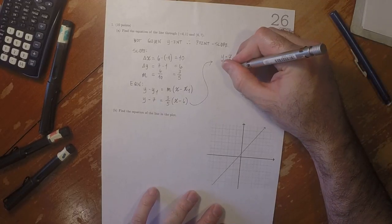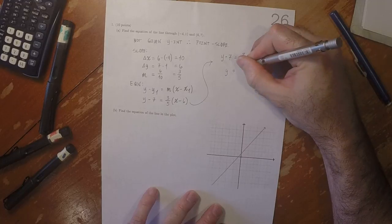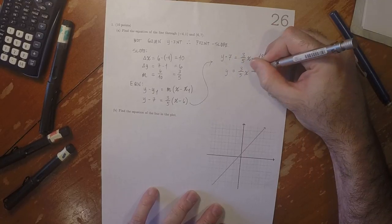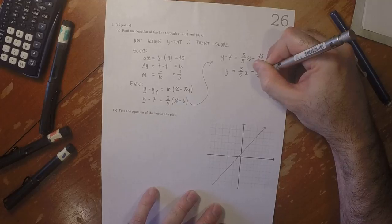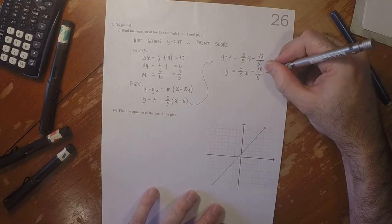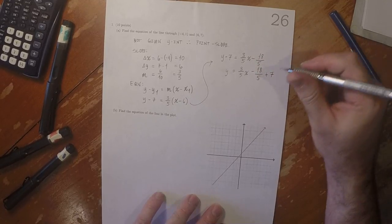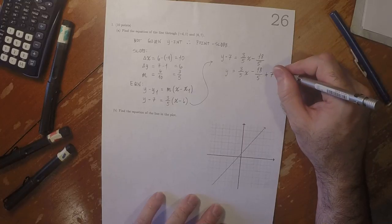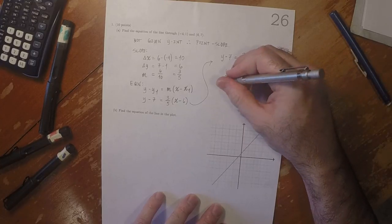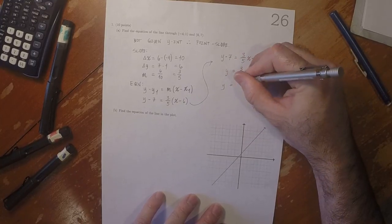So y is 3 fifths x minus 18 fifths plus 7. Now 7 is 35 fifths, so that'd be